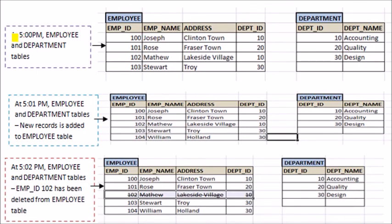See here, at 5:00 PM, employee and department tables look like this. We can add a new record to the employee table at 5:01 PM. After that, it looks like this. At 5:02 PM, employee ID 102 has been deleted from employee table. Then it looks like this. Each set of employee or department data set represents an instance of the database.